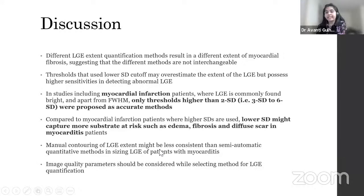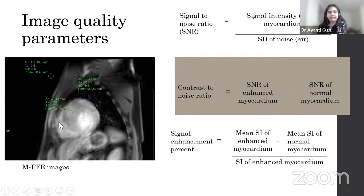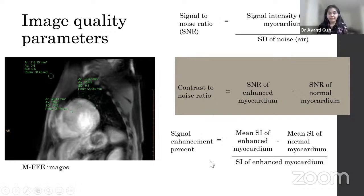Image quality parameters must be considered when selecting methods for LGE quantification. These include signal-to-noise ratio, contrast-to-noise ratio, and signal enhancement percentage. Using source and magnitude images, an ROI is placed in air for noise, on remote myocardium, and on enhanced myocardium to derive these image quality parameters before analyzing LGE.